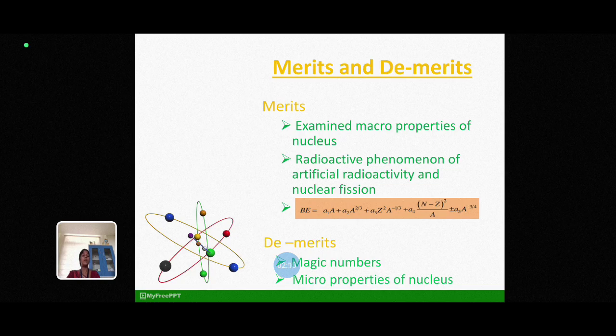While the third term refers electrostatic repulsion between the each pair of proton in a nucleus. Fourth term reflects N is equal to Z stability. The last term is positive for even-even nuclei and it is negative for odd-odd nuclei and del is equal to 0 for an odd atomic number.